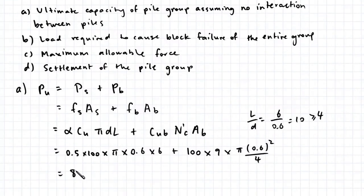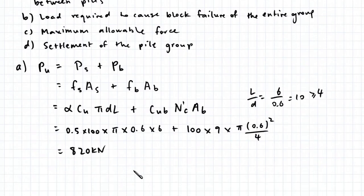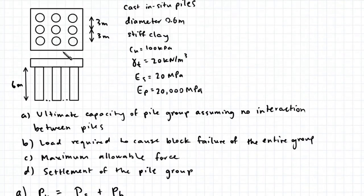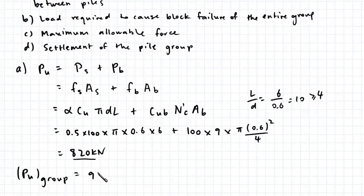This works out to be 820 kN, which is the ultimate capacity for a single pile. To find the capacity of the entire group, we multiply this by the number of piles, 9 piles. So 9 times 820 gives us 7,380 kN.